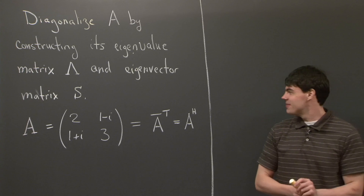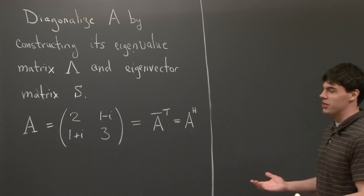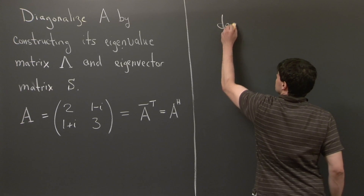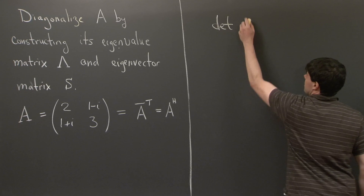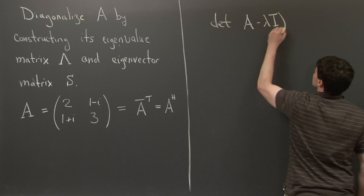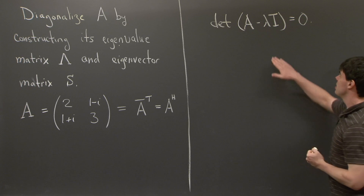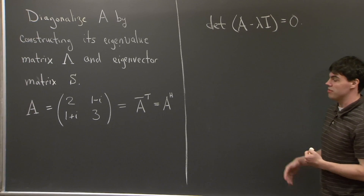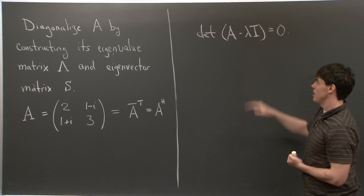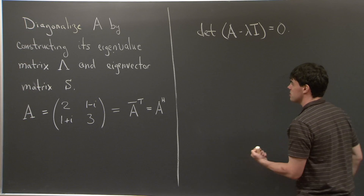OK, welcome back. So what's the first step in computing the eigenvectors and eigenvalues of a matrix? It's to take a look at the characteristic equation. Specifically, we take det of A minus lambda I. And quite possibly the only thing new with this problem is that the entries of the matrix A are complex.